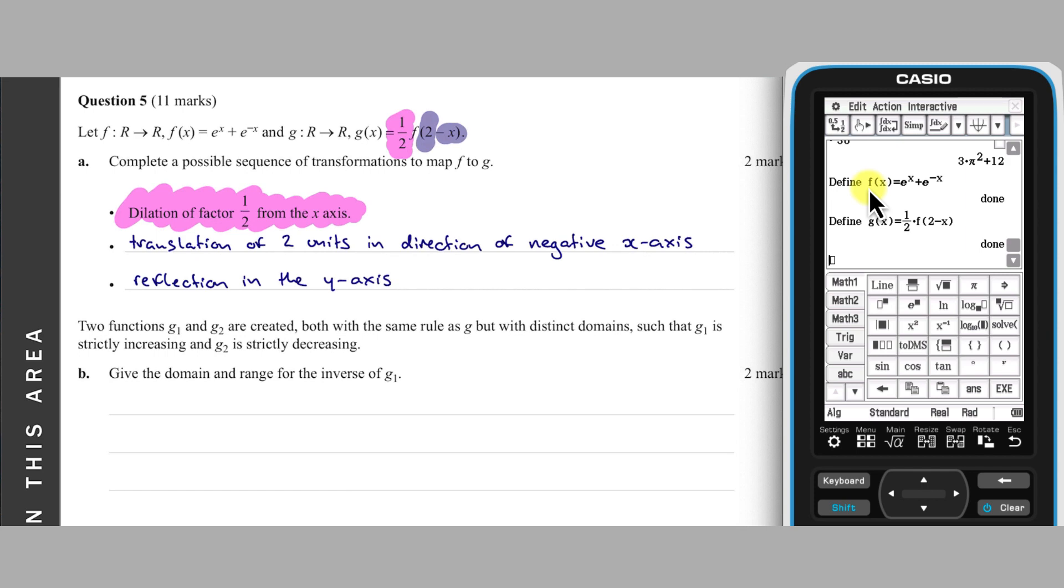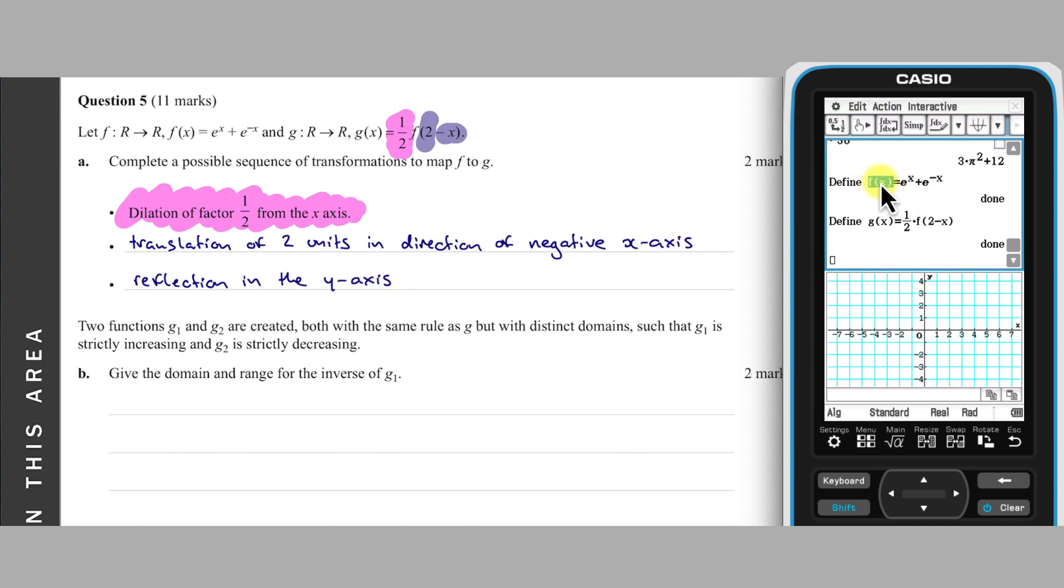These transformations can be confirmed by graphing Y equals F of X and Y equals G of X. I am going to do so by opening a graph window inside ClassPad's main app, and then dropping F of X and G of X into it. Those three transformations can be seen most clearly by looking at the turning point of F of X.